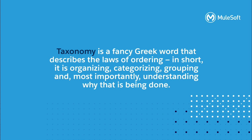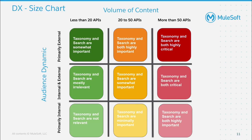But instead of creating random categories, what is the best approach to create a categorization model that is structured and meaningful? The best approach is by embracing a taxonomy model. Taxonomy is a Greek word that describes the law of ordering — in short, it is organizing, categorizing, grouping, but most importantly, understanding why that is being done. As the number of APIs grows, taxonomy and search become very critical for both internal and external audiences.